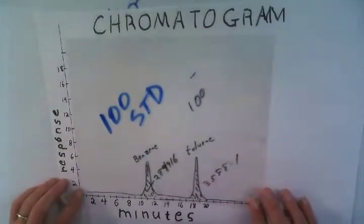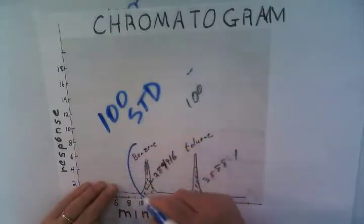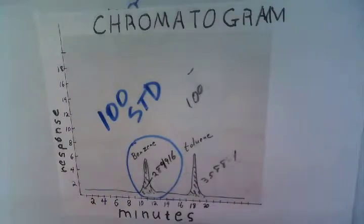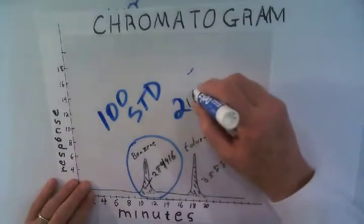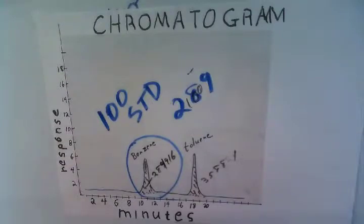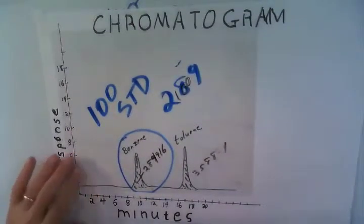We run a standard. We're only looking at benzene here. We run a benzene standard and the instrument gives us back 289916. We're going to call this 289. I'm going to pick three significant figures. It might be prudent to pick four but let's just go with three.